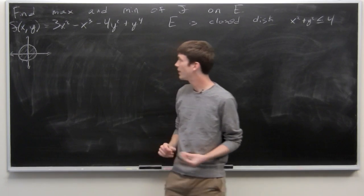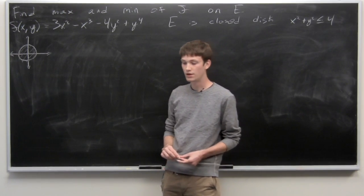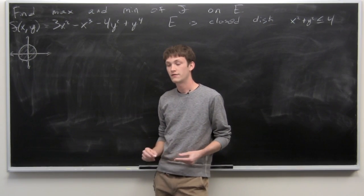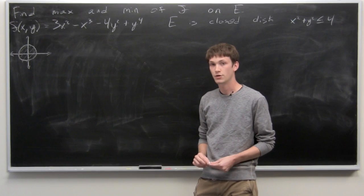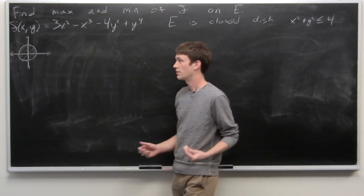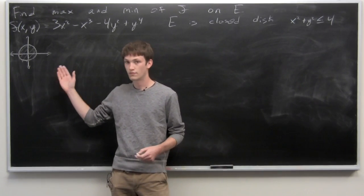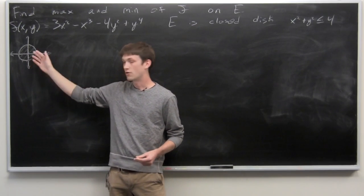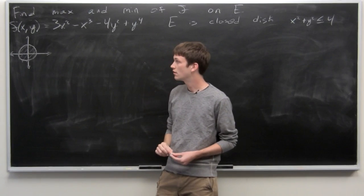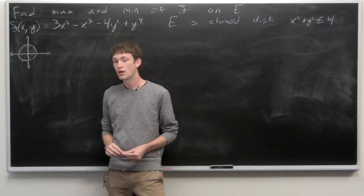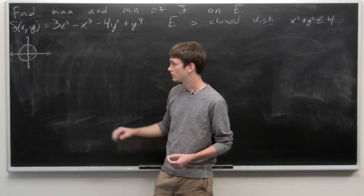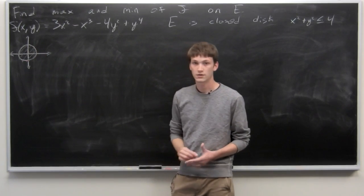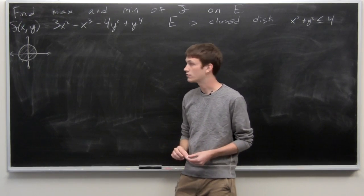To find the max and min of our function, we want to calculate the gradient vector in the normal way and set it equal to zero to find any interior critical points. We're going to look for points where the gradient vector equals zero that lie within our region E, and then check the boundary to see if perhaps the global max or min exists there.